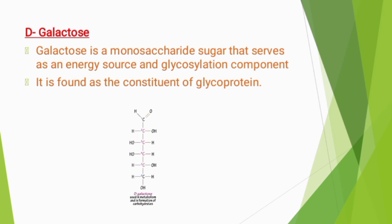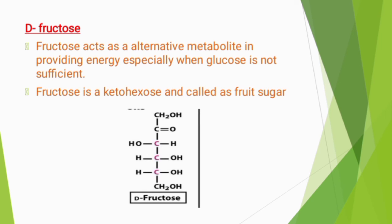D-fructose acts as an alternative metabolite in providing energy, especially when glucose is not sufficient. Fructose is a ketohexose and is called fruit sugar. Here we can see the structure of D-fructose.